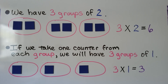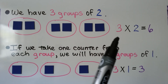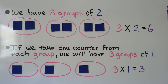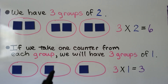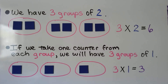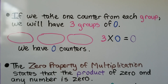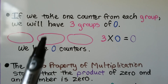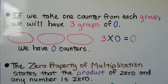Here we have 3 groups of 2 — there are 3 groups with 2 in each group. That's 3 times 2 is equal to 6. If we take one counter from each group, we'll have 3 groups of 1, so 3 times 1 is equal to 3. If we take one more counter from each group, we'll have 3 groups of 0.